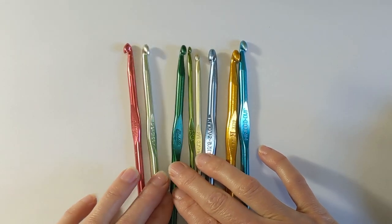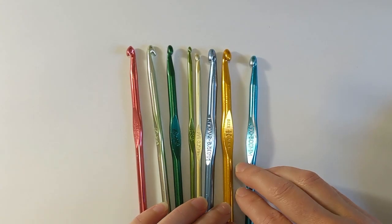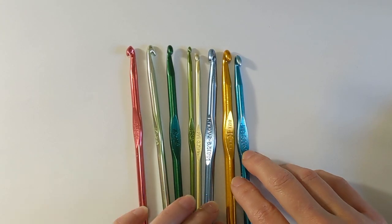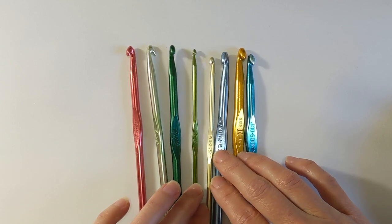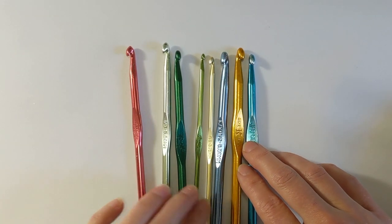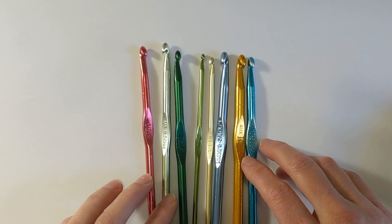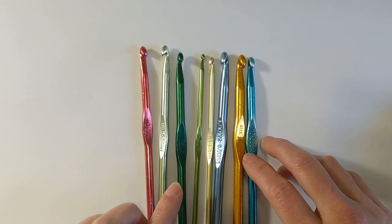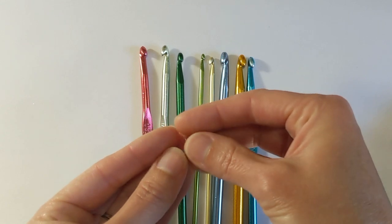So those are the differences that I've noticed between both the vintage Boyes and then even comparing it to a Hero. Now I am not an expert on these companies. I'm not an expert on the history of crochet. Other people have done a bit more research and can tell you more, but I can guarantee that not all hooks are created the same.